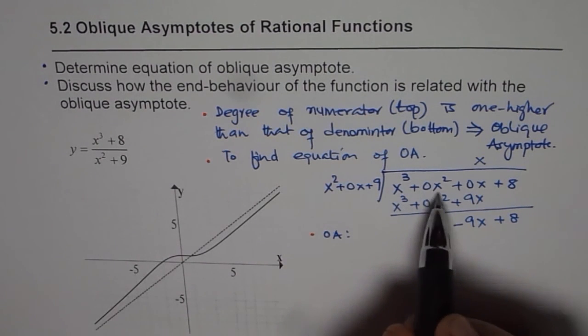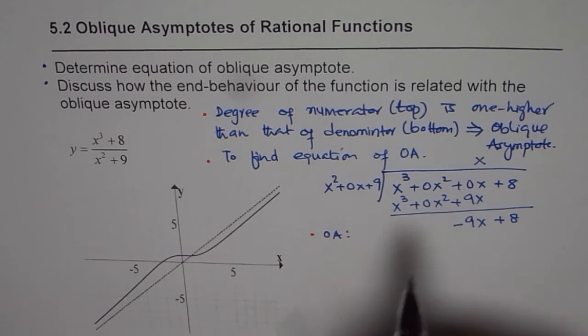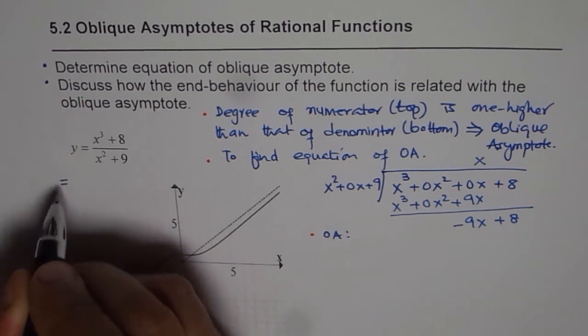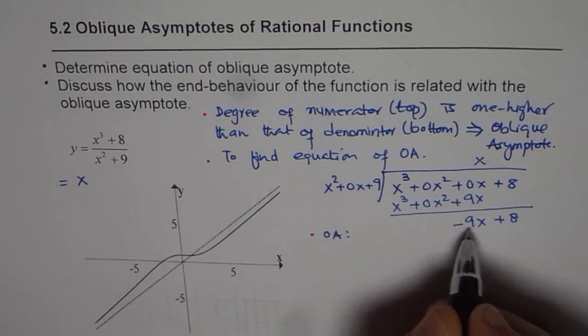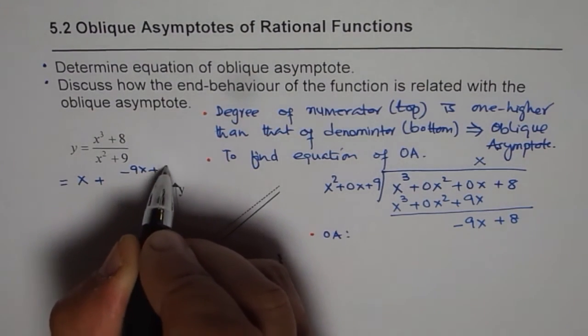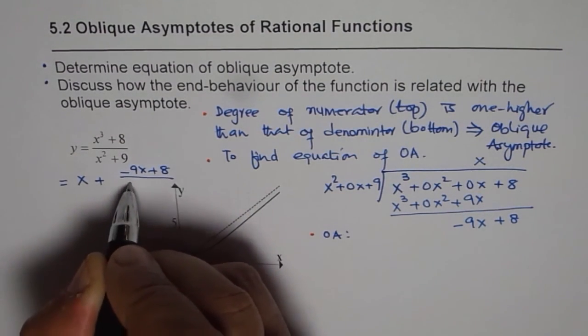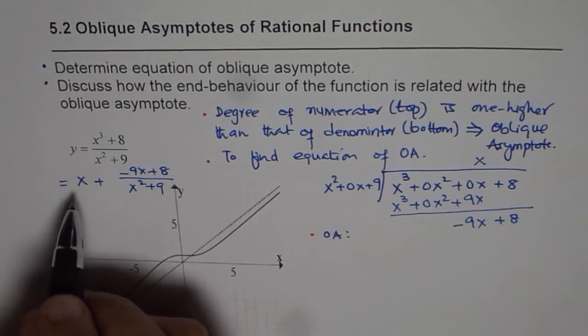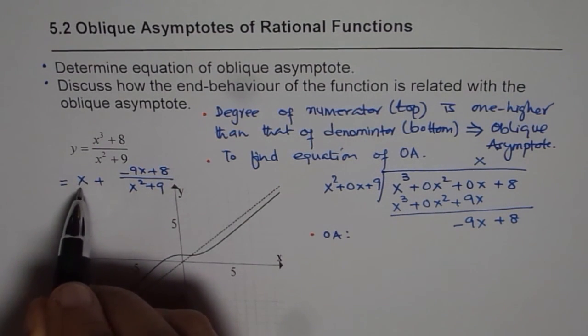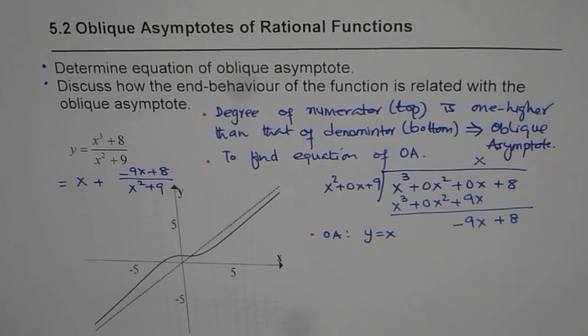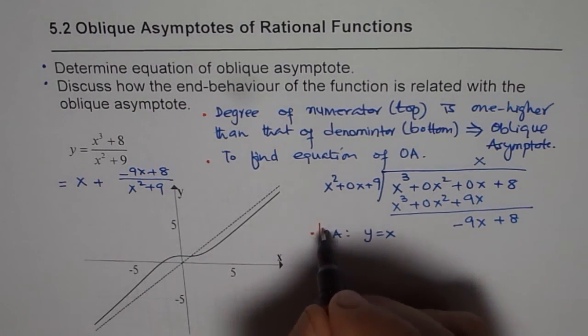Let me rewrite this in the quotient form. This equation could be written as x plus minus 9x plus 8 divided by x squared plus 9. So oblique asymptote is this equation of linear function, which is y equals to x. So that is the oblique asymptote we have been looking for.